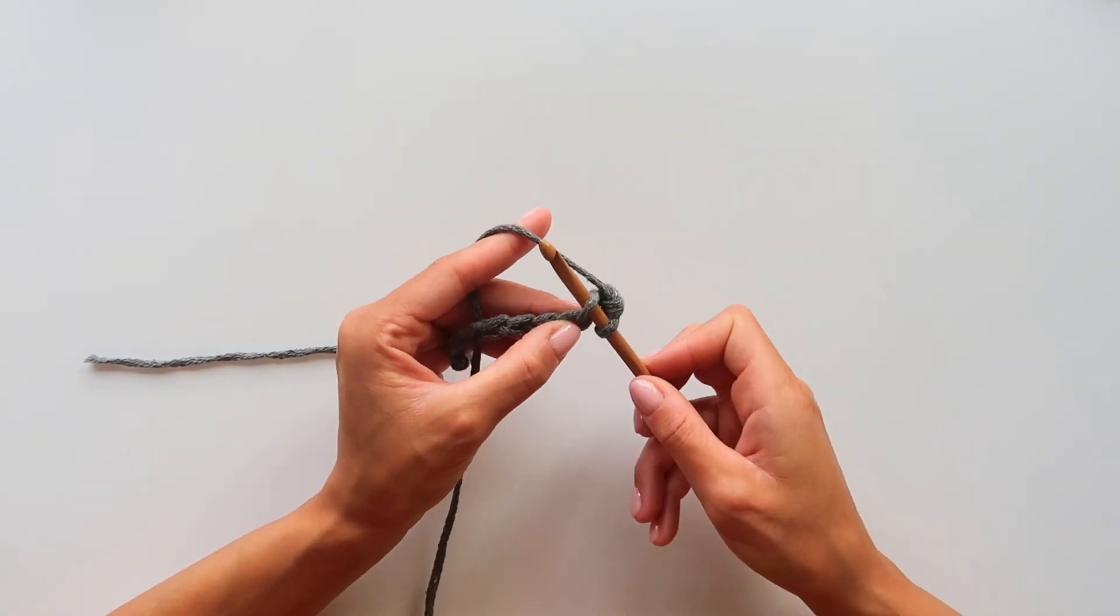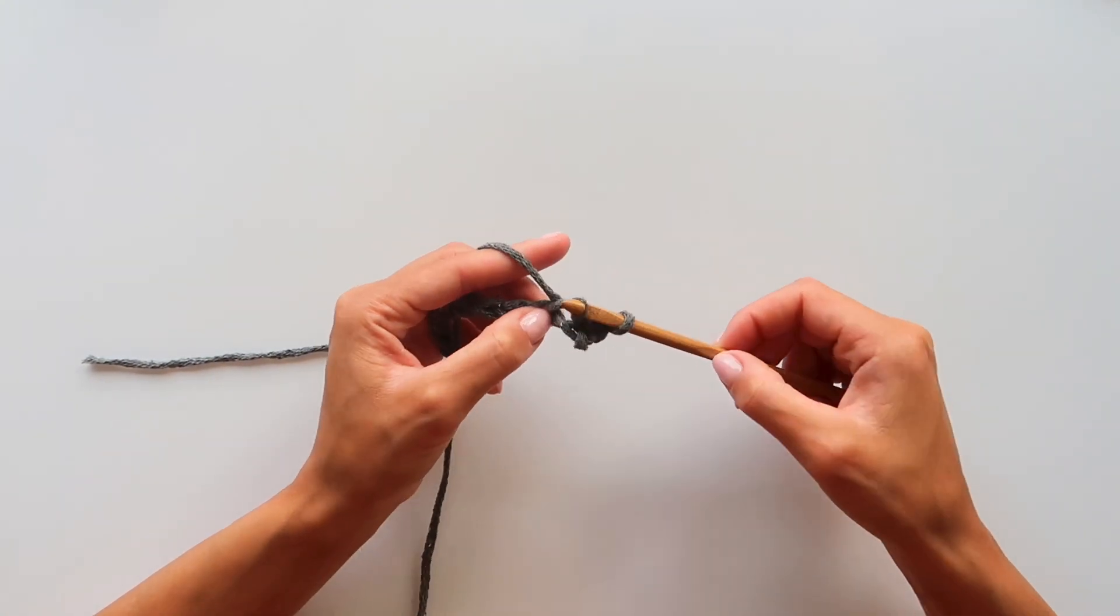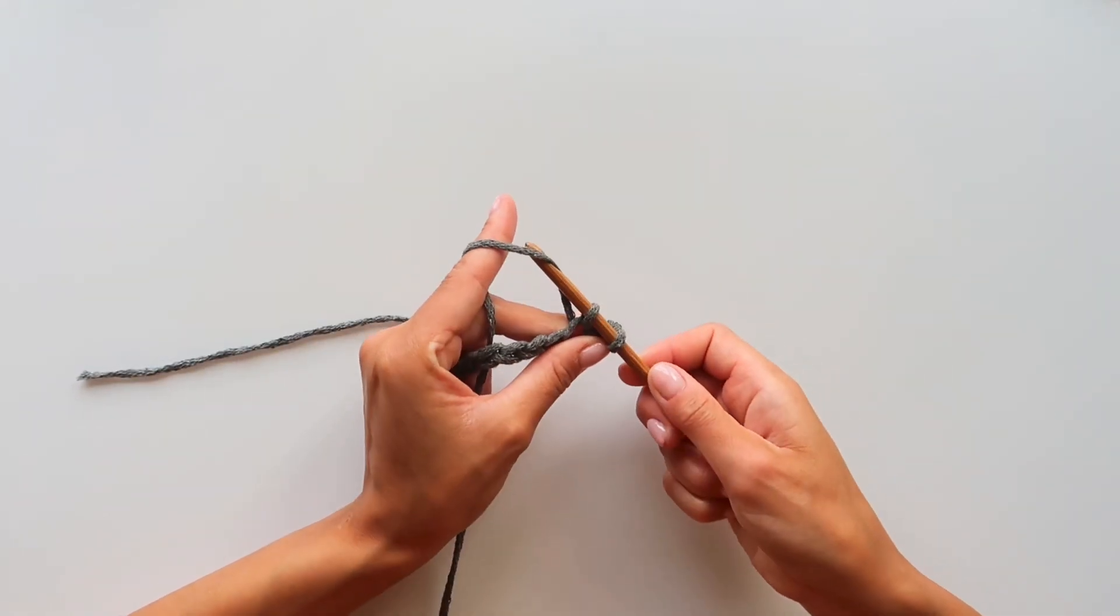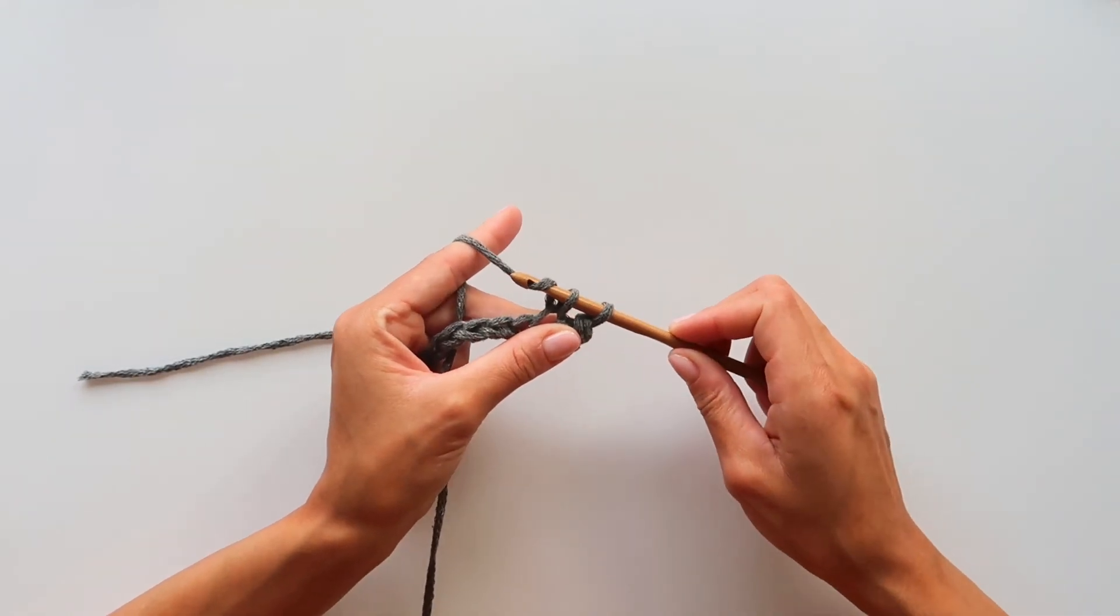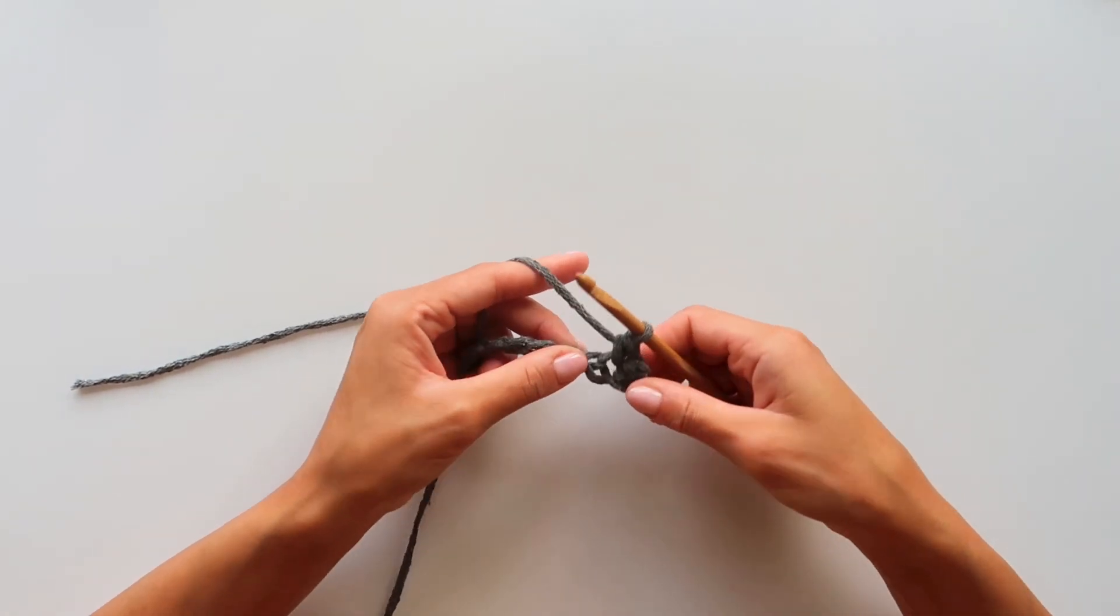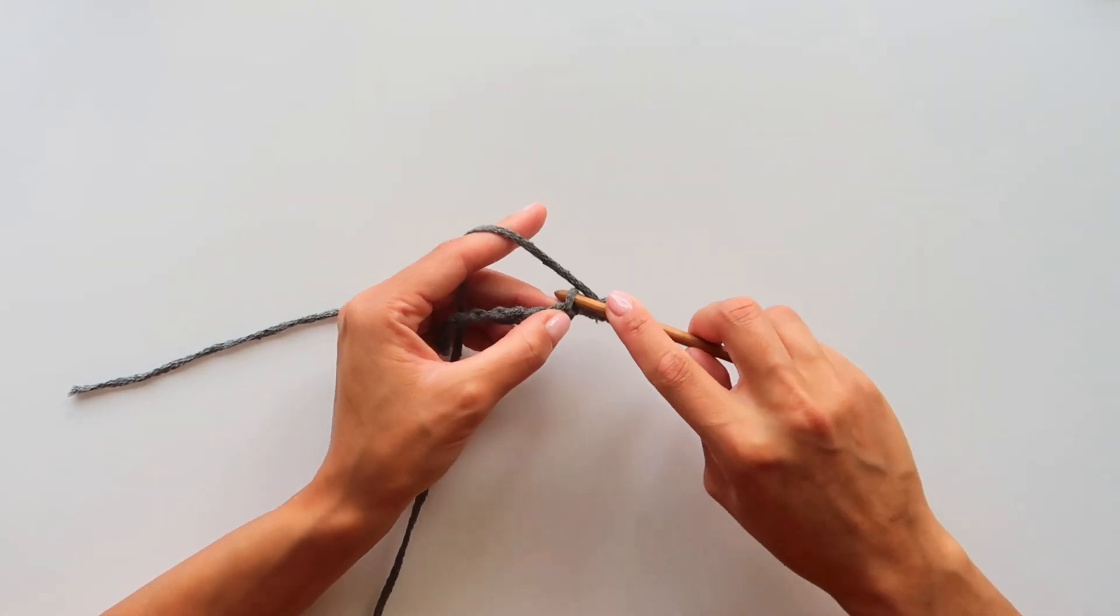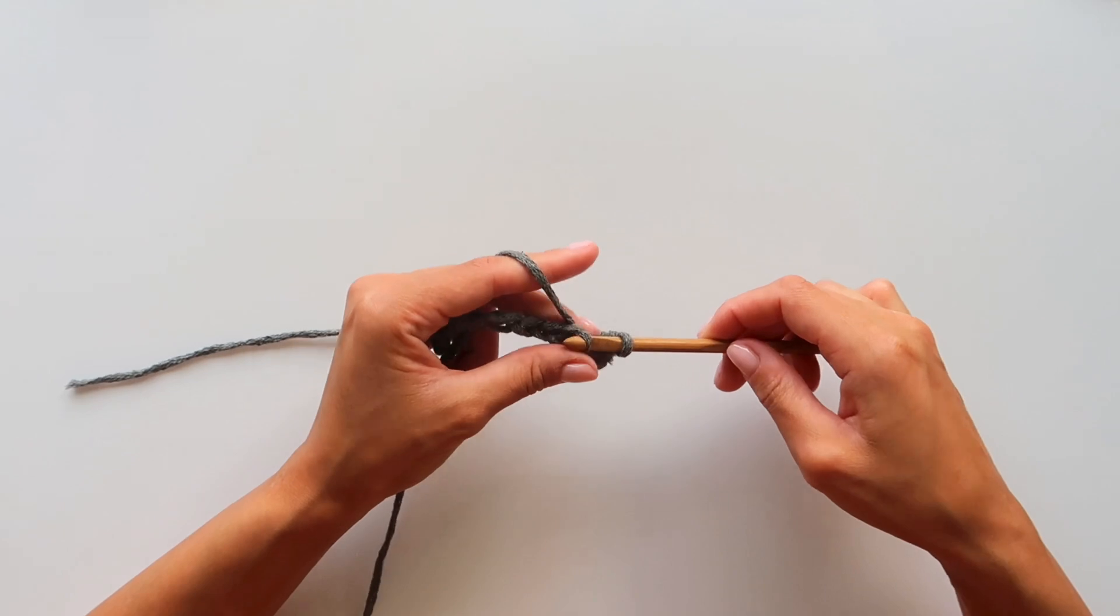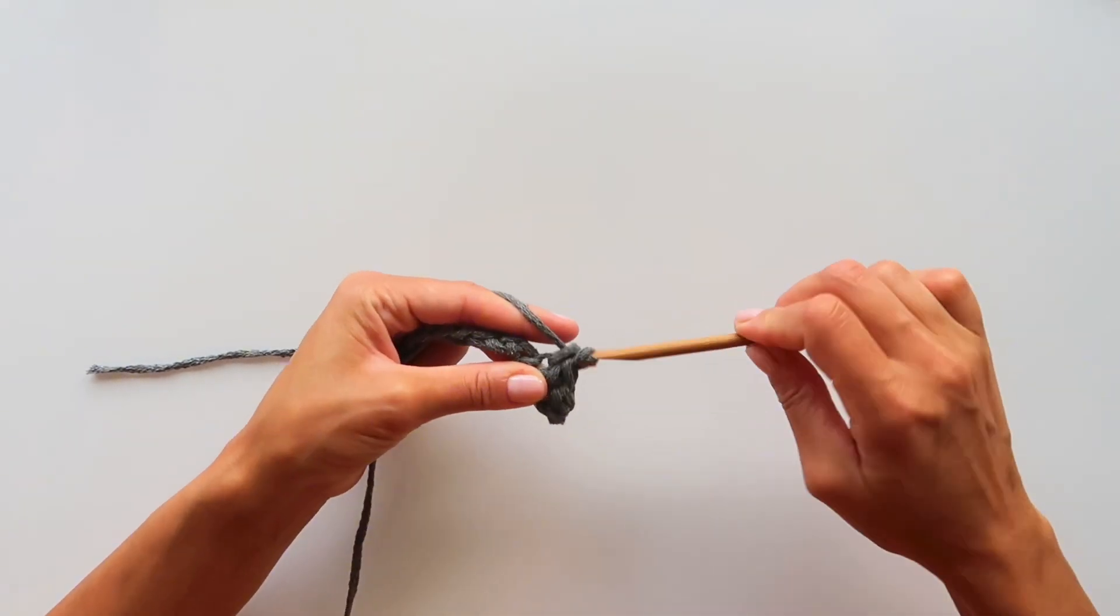In the loop, grab yarn, two loops on your hook, grab some yarn and pull through. In the loop, grab yarn, two loops and pull through.